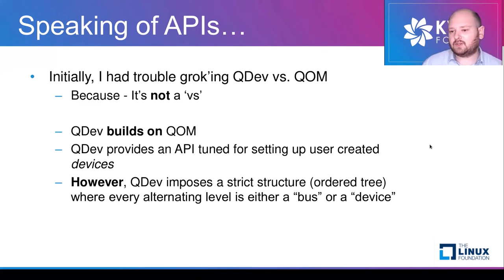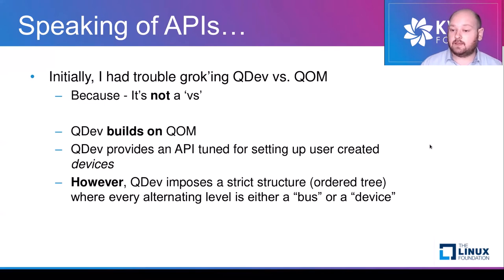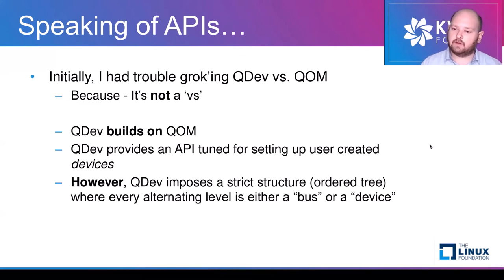QDev builds on the QEMU object model and provides an API tuned for setting up user-created devices — with emphasis on devices, because devices are things instantiated on the command line with the dash-device flag. While it provides a nice API and tools to configure these devices, it also imposes a very strict structure on how to wire up your device inside the QEMU machine you're emulating. This is an ordered tree where every alternating level is either a bus, which can have multiple devices attached, or a device, which can create multiple children buses.